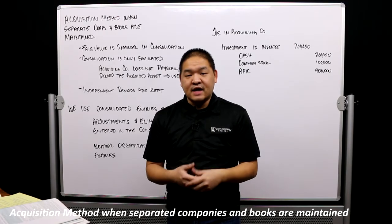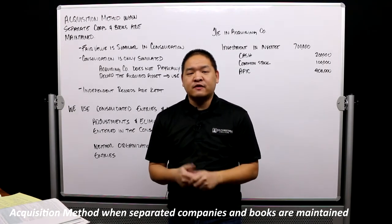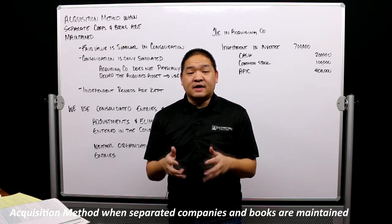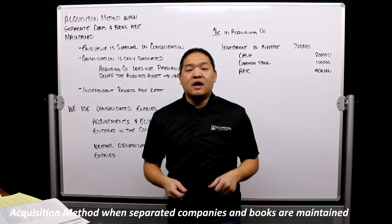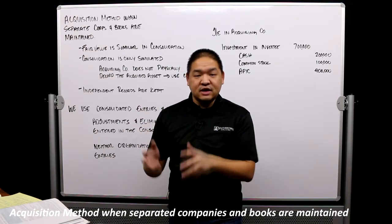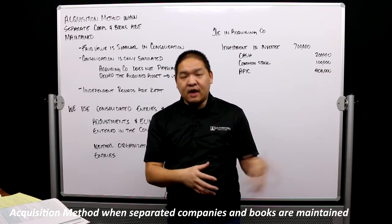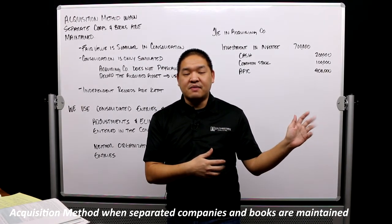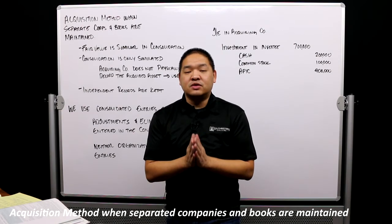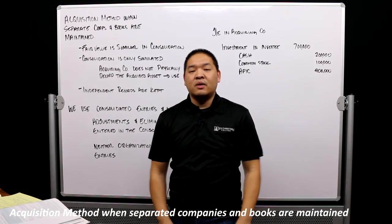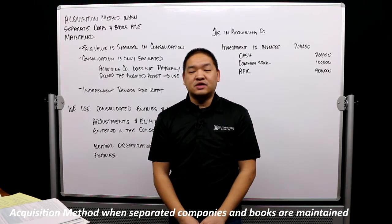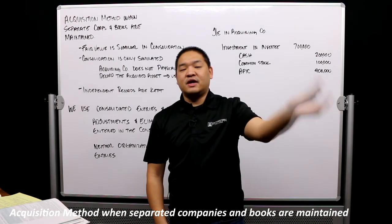Typically this is done in Excel. Sheet one has all the trial balances for company A, sheet two has all the trial balances for company B, sheet three combines those balances, and sheet four or five contains all the consolidated entries. Sheet six takes everything from sheet three and melds it into the financial statement. Remember, when we don't consolidate on day one, we will do this every single year — reconsolidating everything and making sure we've eliminated or adjusted all the entries.